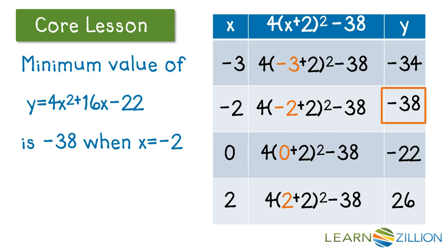So, it was really important for us to rewrite our function into y equals 4 times the quantity x plus 2 squared minus 38, because it makes that minimum value so much easier to see.